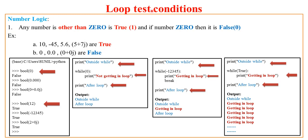Now we'll see various test conditions used in loops. Any number other than 0 is always true. If a number is 0, it has boolean value false. If a number is other than 0, it has boolean value true. For example, 10, -45, 5.6, and 5+7j are all non-zero numbers and are interpreted internally by Python as having boolean value true.